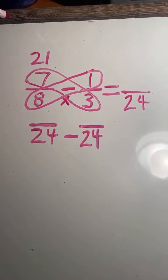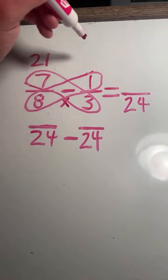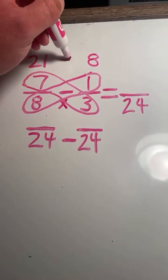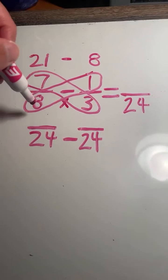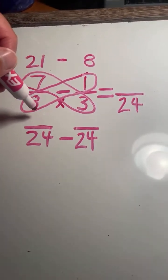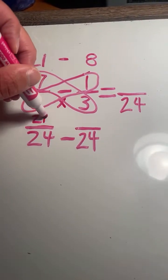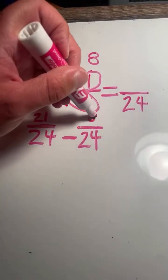7 times 3 is 21. 8 times 1 is 8. So 7 eighths has been converted to 21 24ths. 1 third has been converted to 8 24ths.